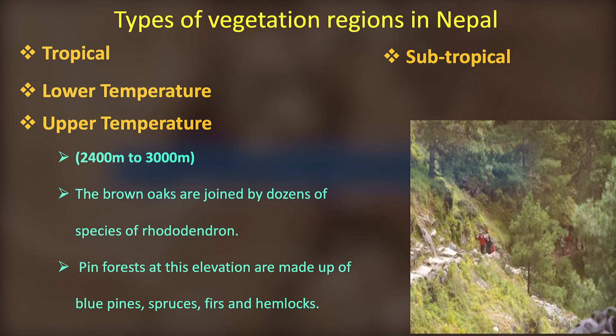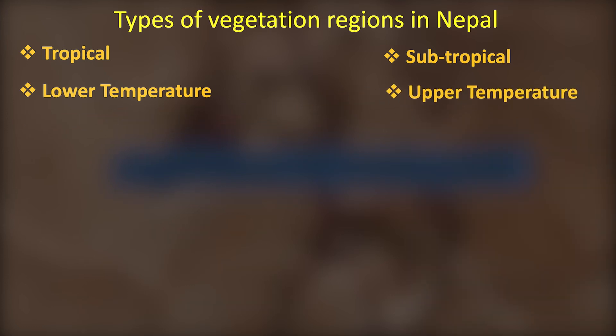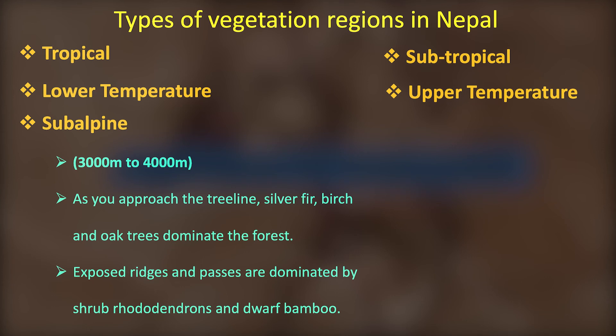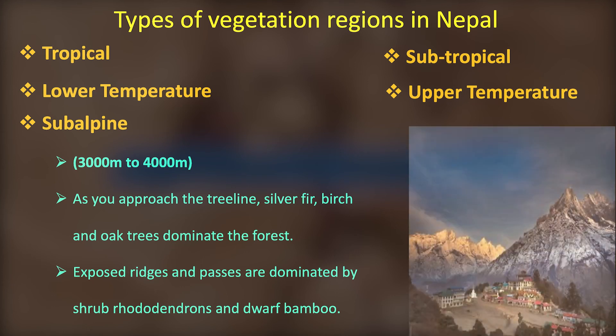Sub-Alpine vegetation is found from 3,000 metres to 4,000 metres. In this zone there are trees near the tree line, little Pine, Rhododendron, and Dwarf Bamboo.